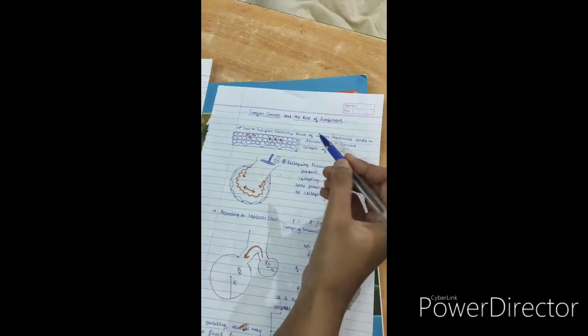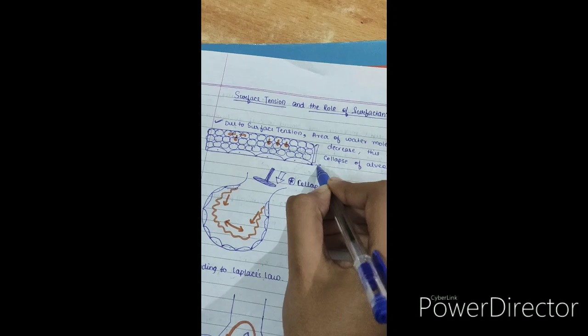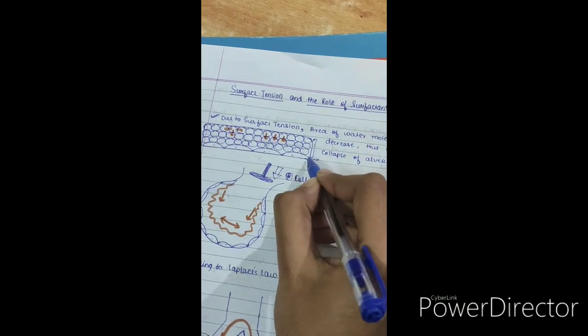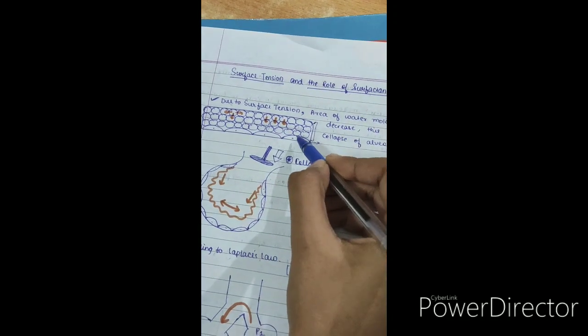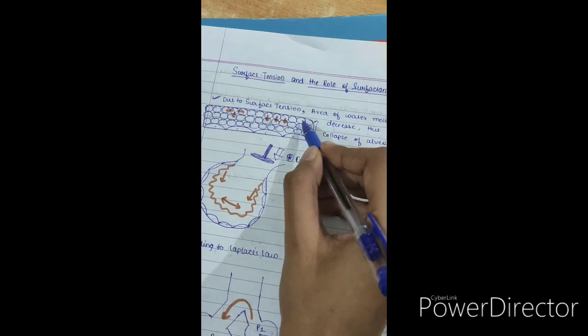If we consider the respiratory tract and the alveolar epithelium, this is the alveolar epithelium which consists of simple squamous cells. Over this we are having the fluid layer. Let us consider now if this is water.